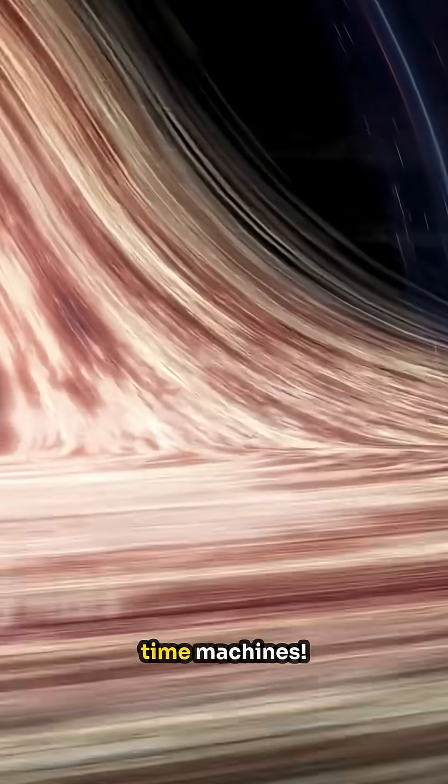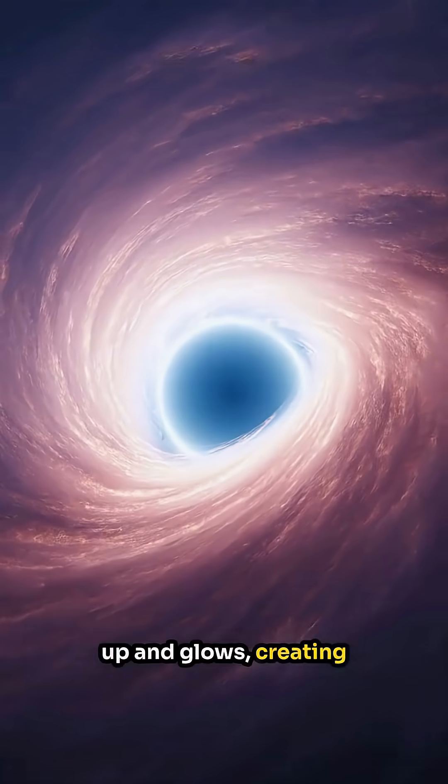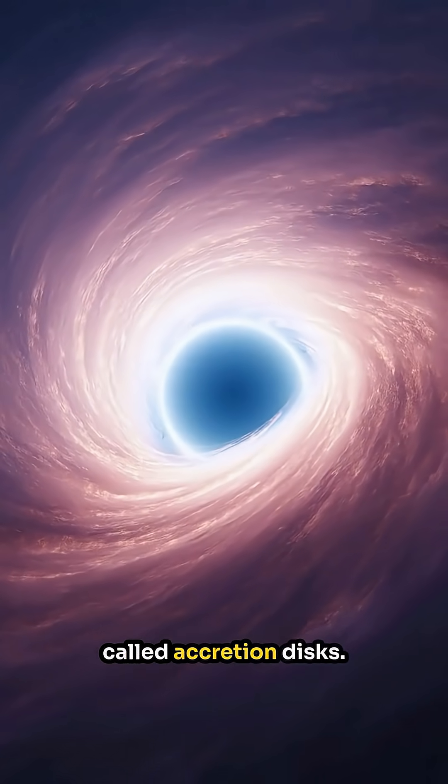Time slows down near a black hole's brink. Imagine real-life time machines. As matter falls towards a black hole, it heats up and glows, creating intense bursts of light called accretion disks.